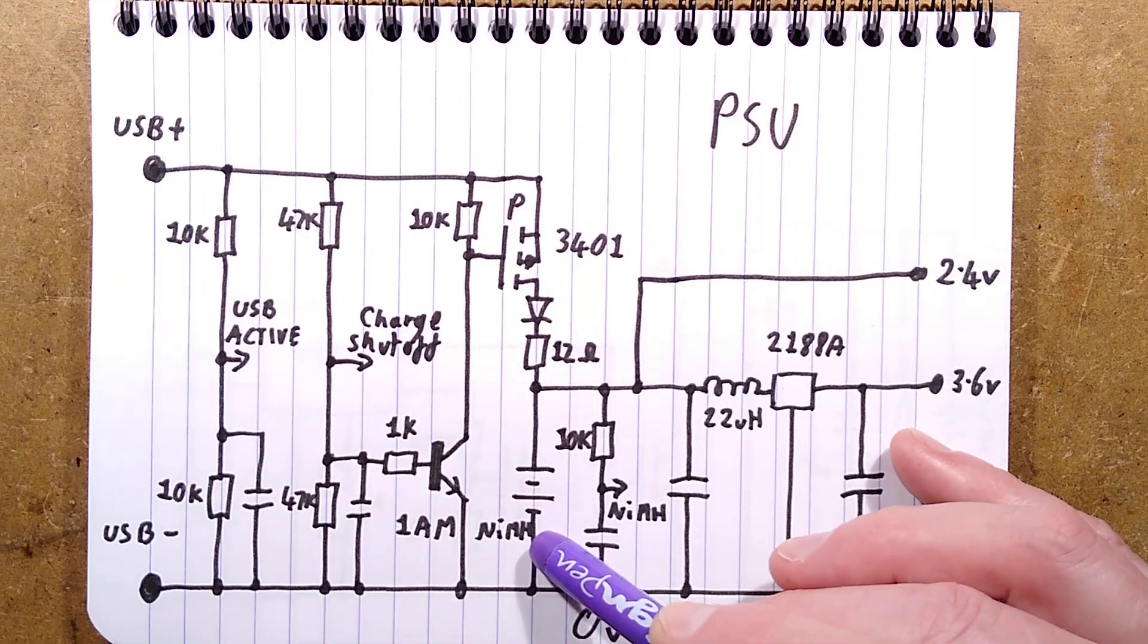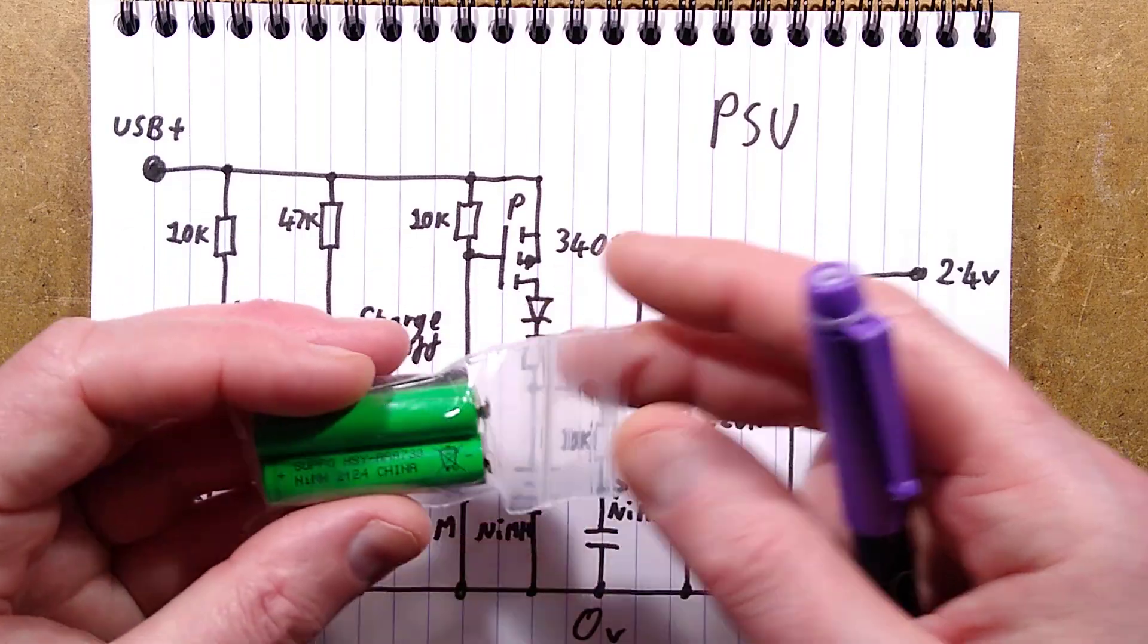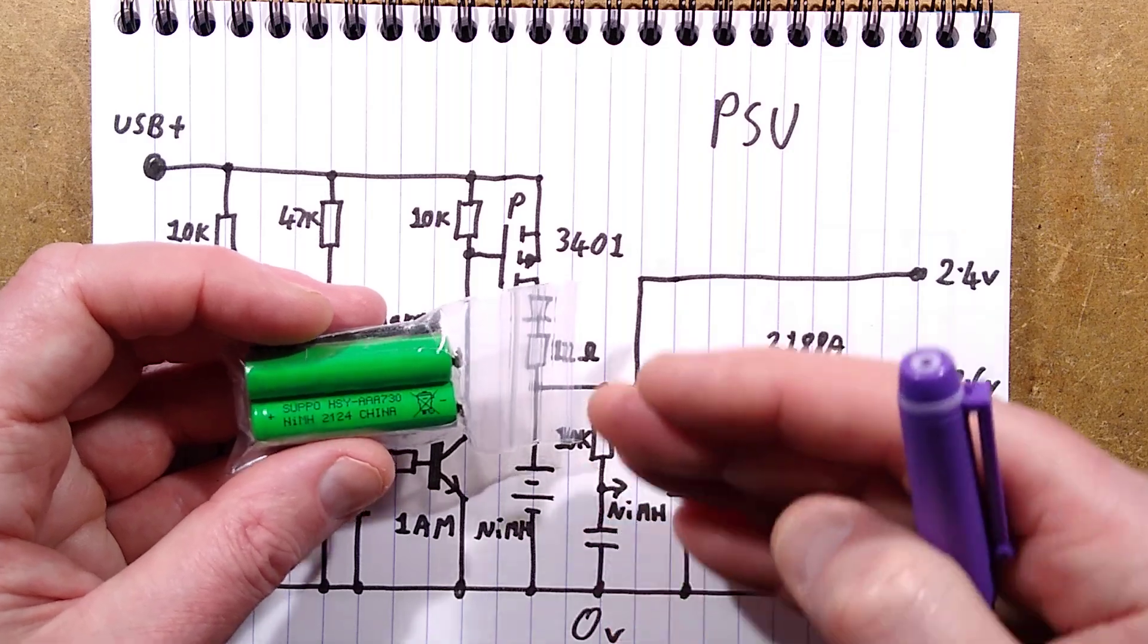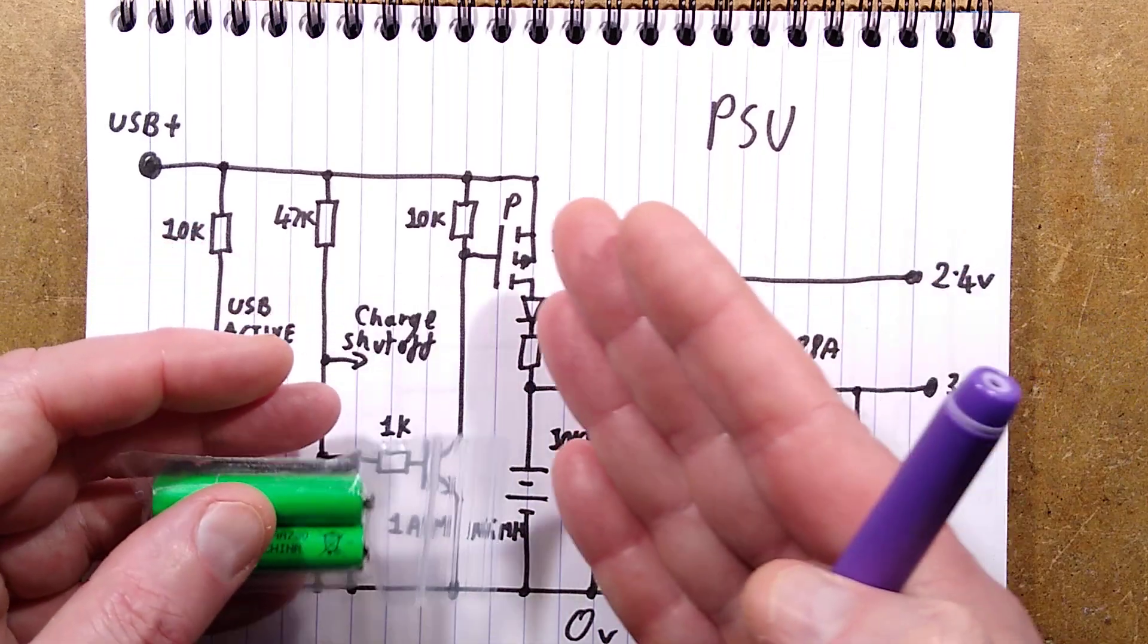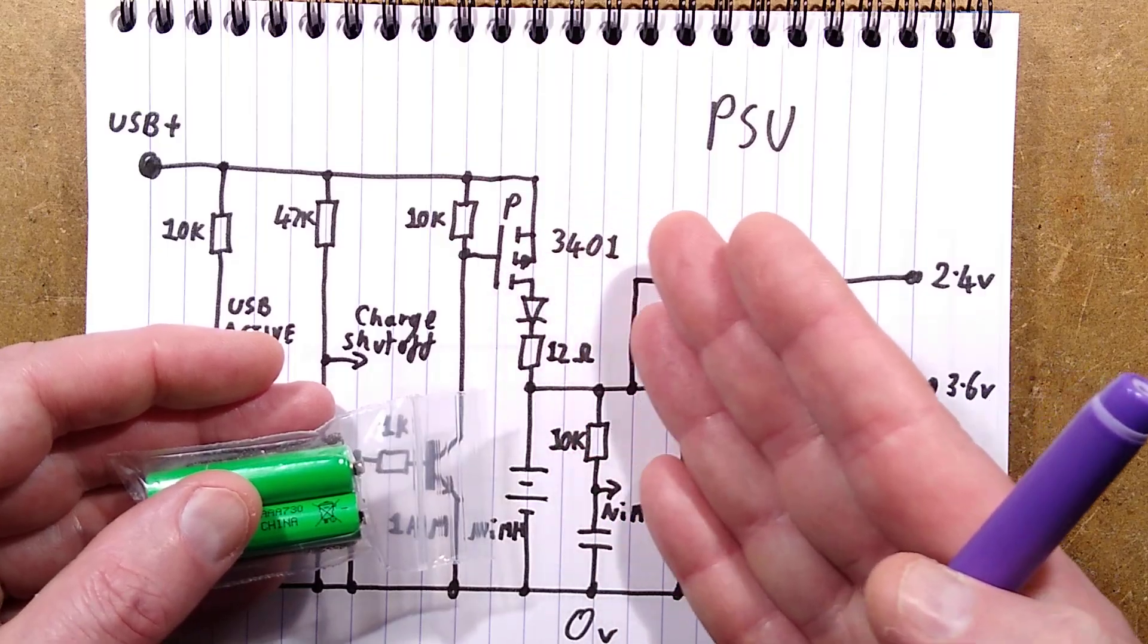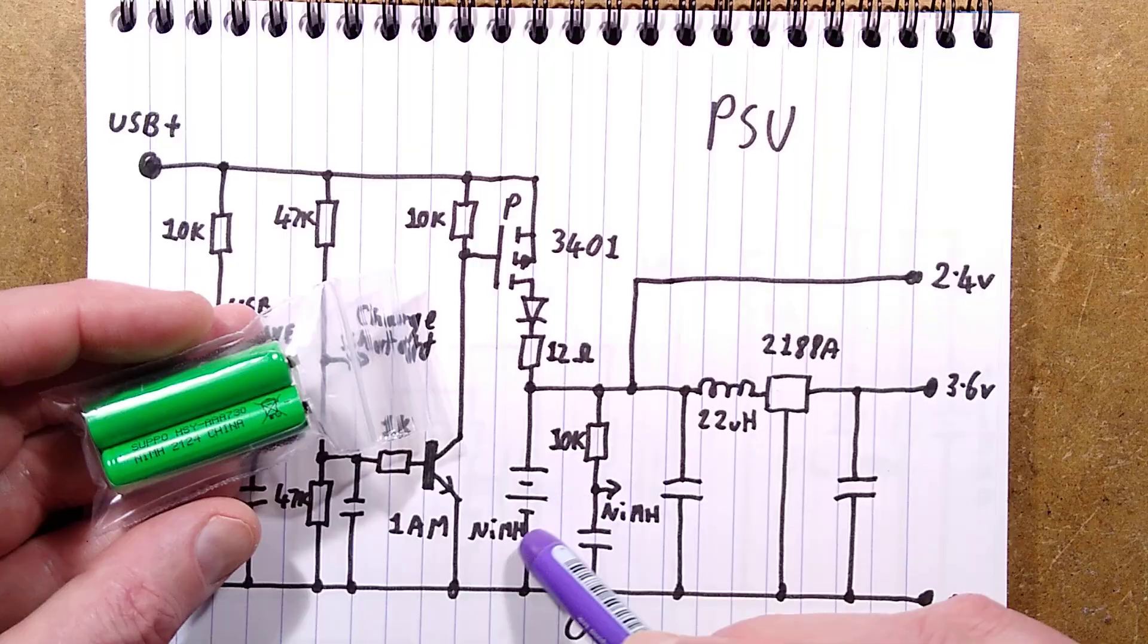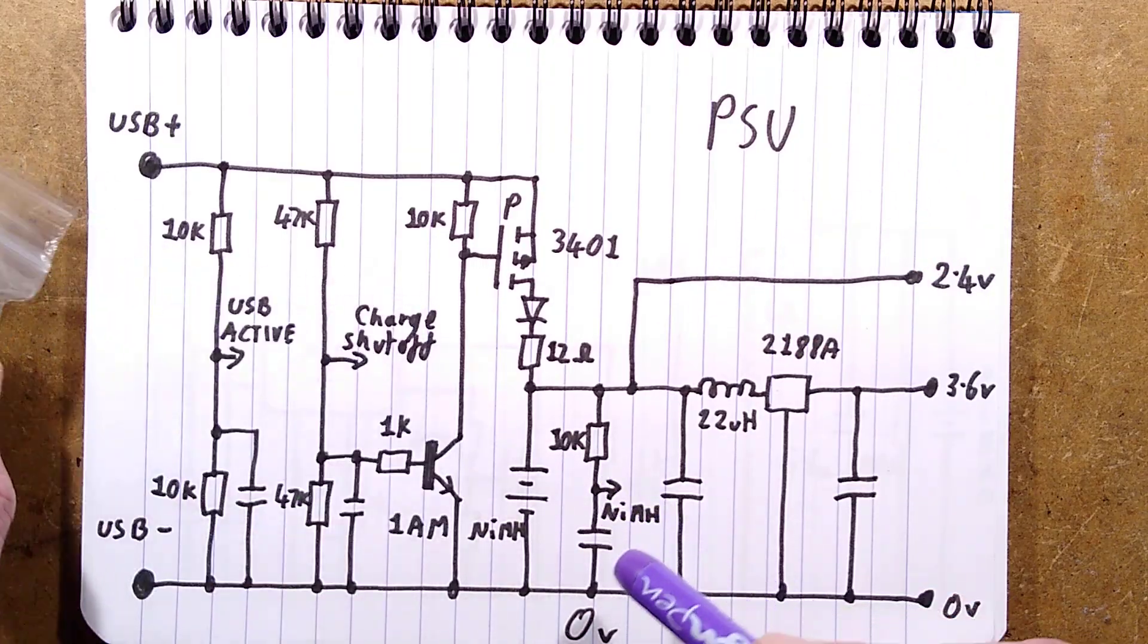One of the advantages of nickel metal hydride, a huge advantage, and I think the reason they've used them here is they've got a very stable voltage over the full discharge. Initially, they'll charge up to about 1.5 volts each, but that will quickly drop back to about 1.2 volts and then it will remain at that level for almost the full discharge. And in this application, that is quite important. So that's giving a nice solid 2.4 volts, which doesn't seem much, but it is being boosted in the next bit of the circuitry.